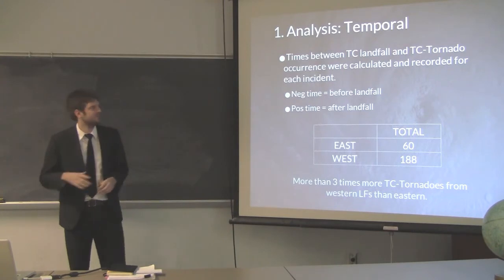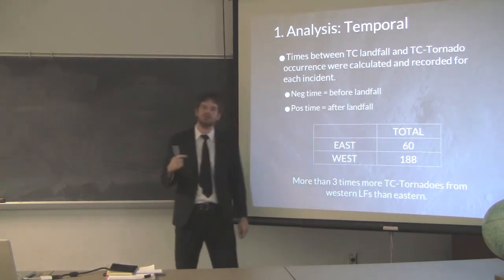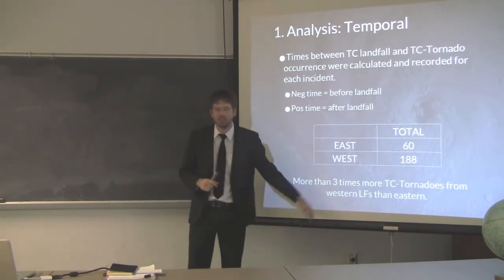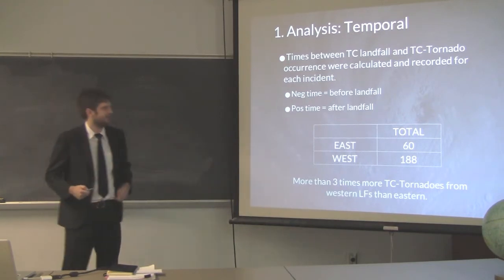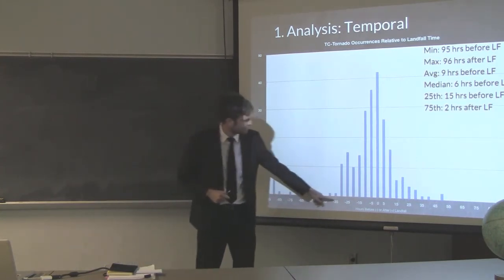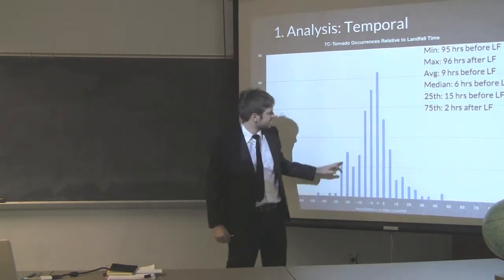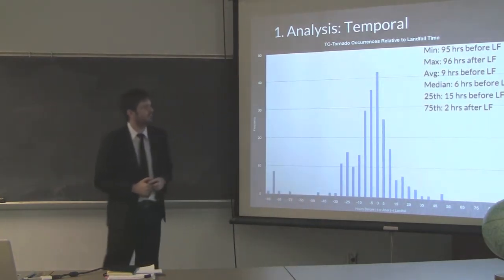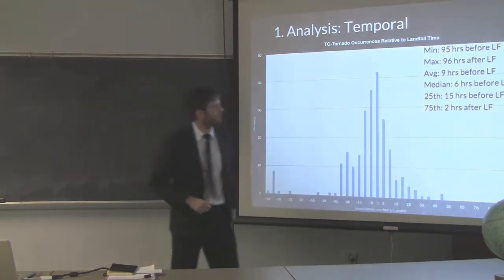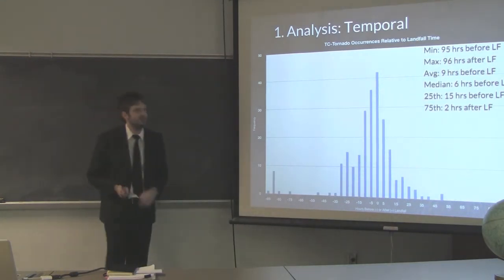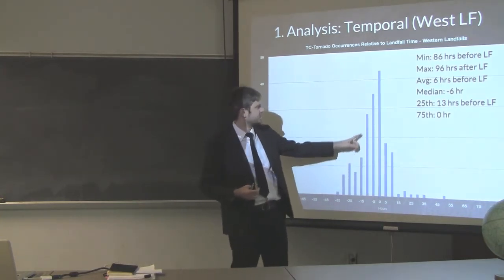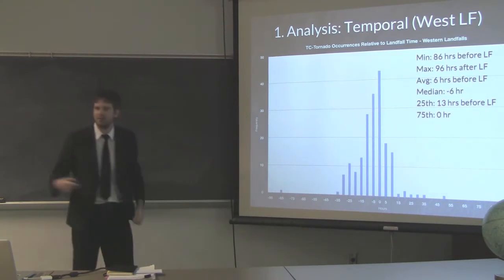Time of occurrence between landfall and TC tornadoes was calculated — negative time means before, positive means after. We have 108 western landfalling tornado events versus 60 eastern, so three times more in the west, which will heavily weigh the overall results. For all tornadoes combined, we see a very steady increase in TC tornado activity right before landfall, with a maximum from four hours before to at landfall, then a steady decrease after. The 75th percentile is just two hours after landfall, with a median of six hours.